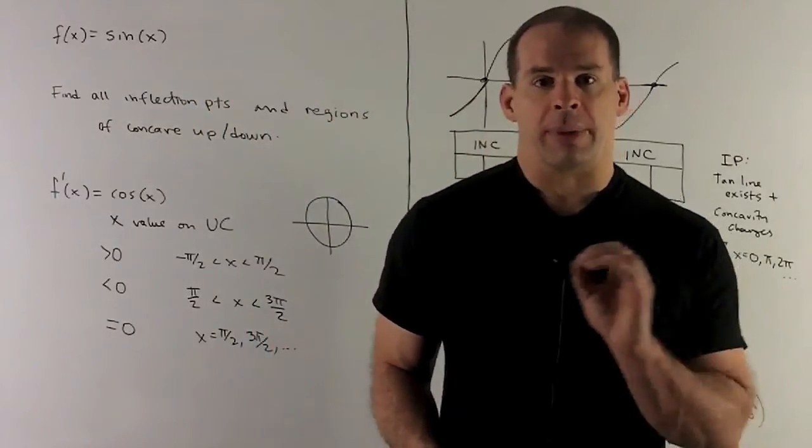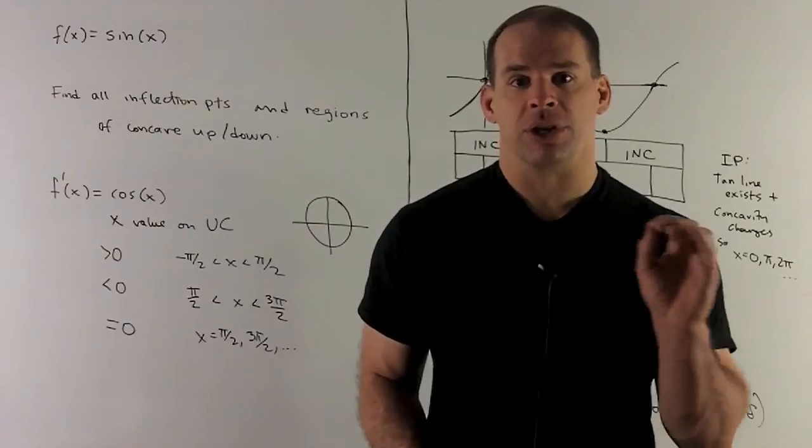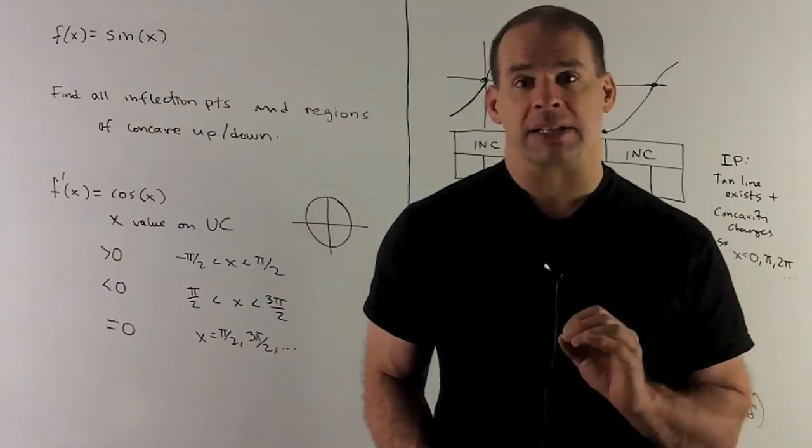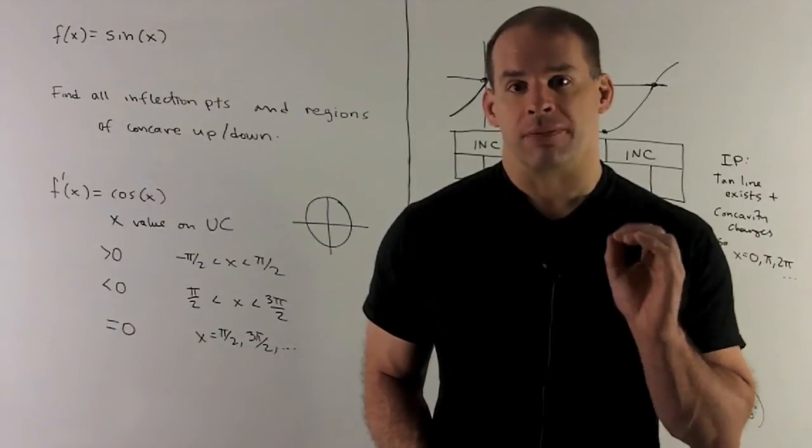Now, we'll alternate back and forth. The regions are going to have length pi. It's just going to go from increasing to decreasing, back to increasing. So that's everything we need to know about our first derivative.